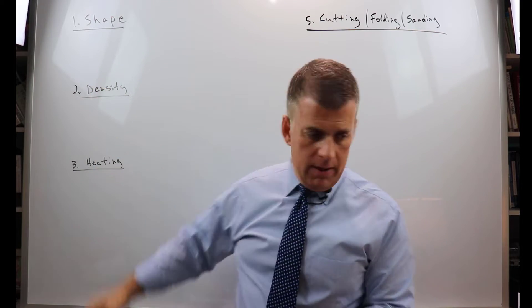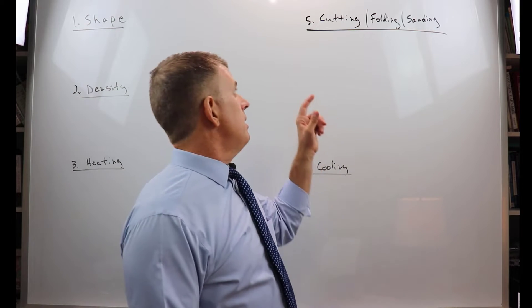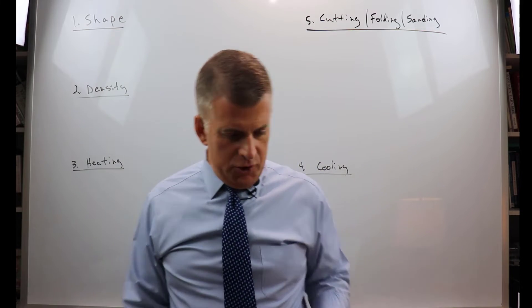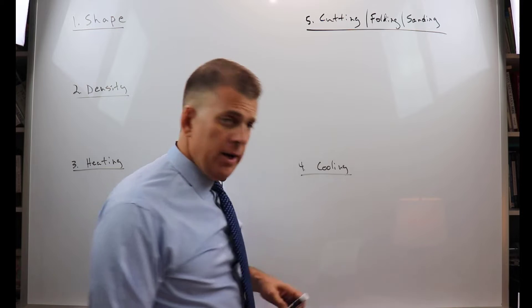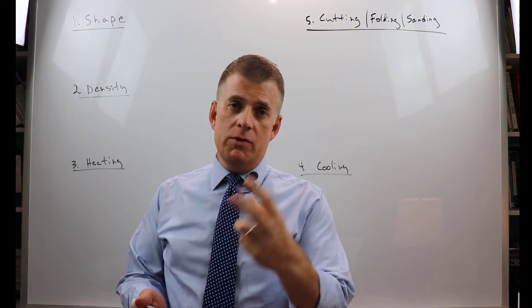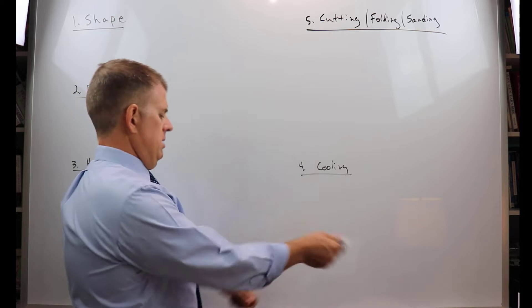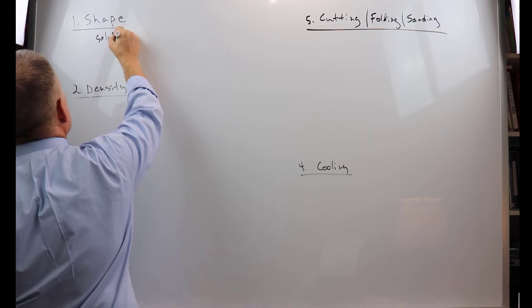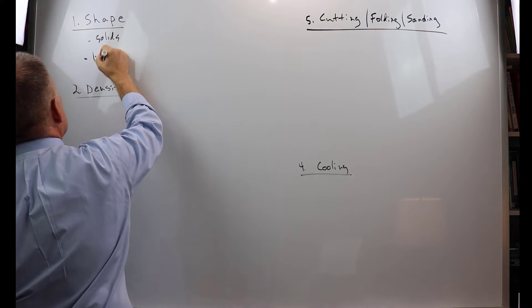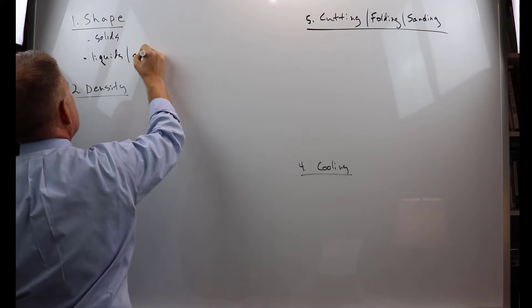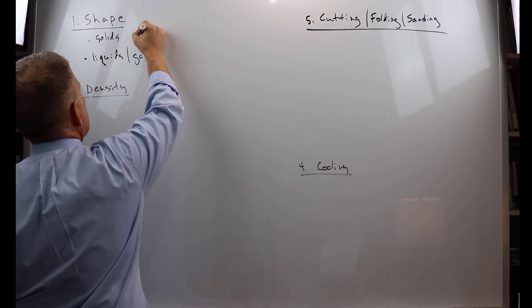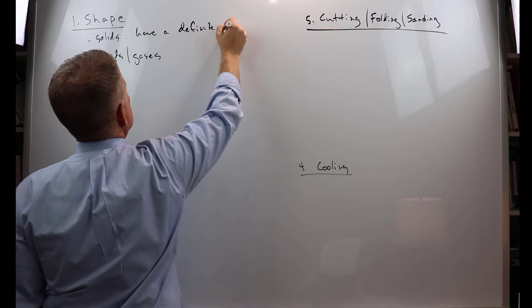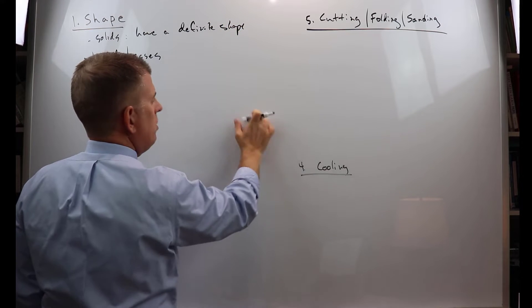You'll see them here: shape, density, heating, cooling, and cutting, folding, and sanding. Let's start with the first one - changes in shape. The TEKS really talk about just two things that we're going to talk about: solids and liquids and gases together. Solids have a definite shape, like this board.